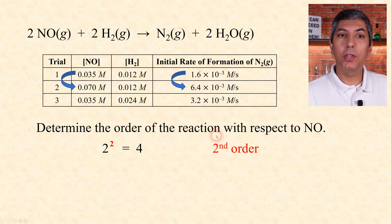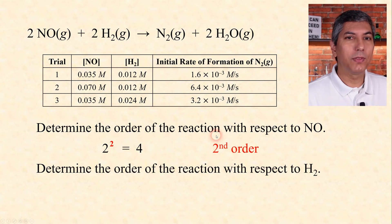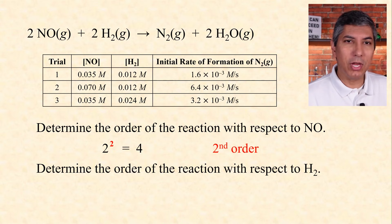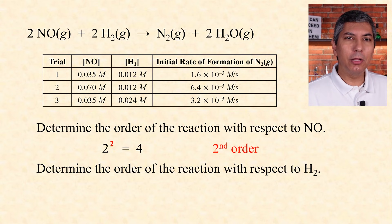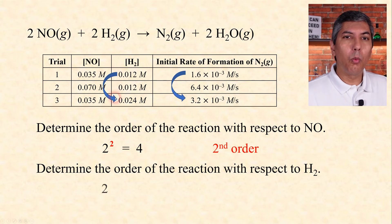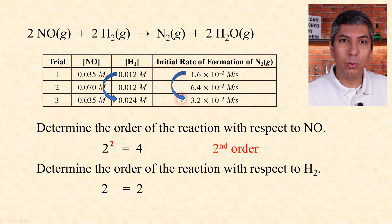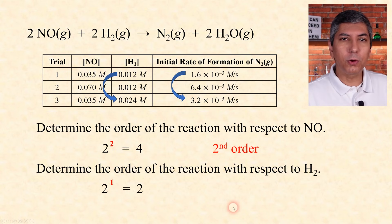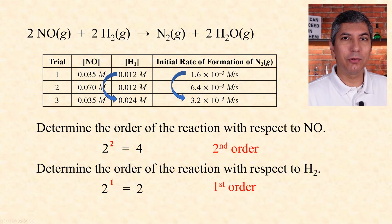We can do the same thing for the other reactant, H2. This time, we find two trials where H2 is the only reactant that's changing while NO stays constant — trials 1 and 3 will work. The H2 concentration is being doubled while the initial rate is doubling as well. The power that makes this a correct equality is 1, so this is first order with respect to hydrogen.